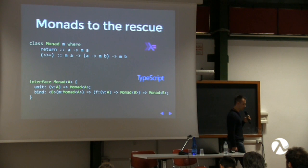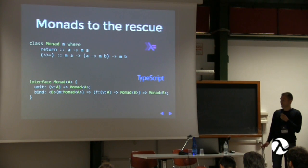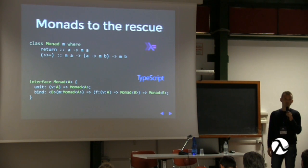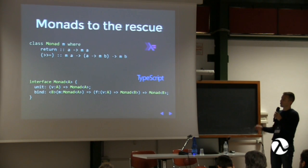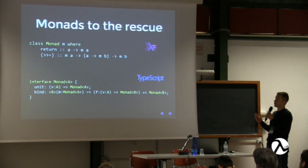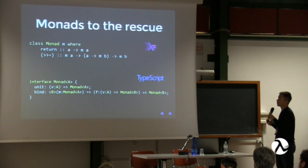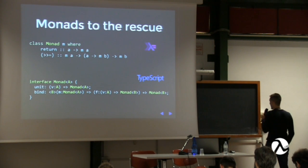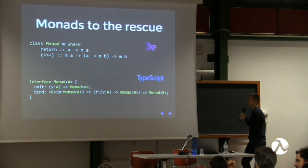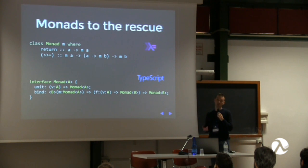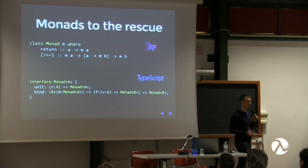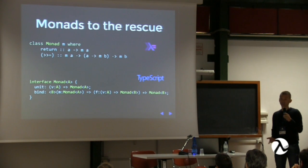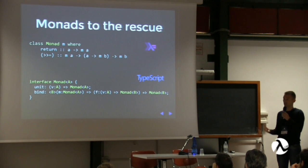Monads to the rescue. Monads are an abstract concept — I'm probably not the best person to talk about them — but you can see what a monad looks like in Haskell and what it may look like in TypeScript. I came up with an interface. A monad is basically a structure with two functions, normally called 'unit' and 'bind'. Unit is also called 'return', but in JavaScript 'return' is a reserved keyword, so I couldn't use it.